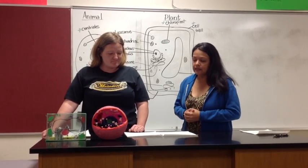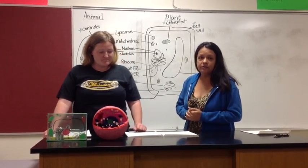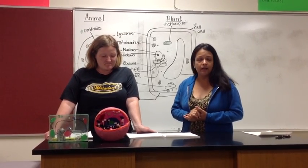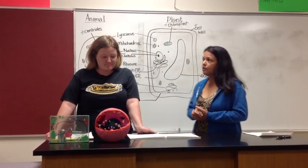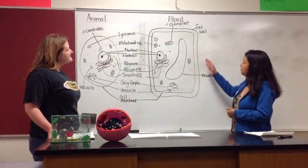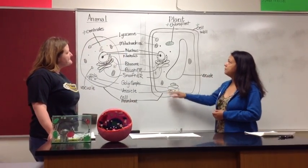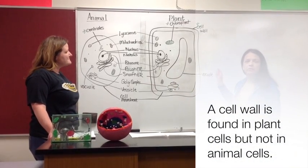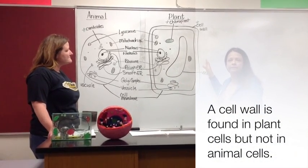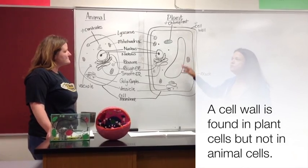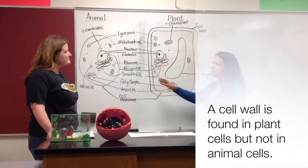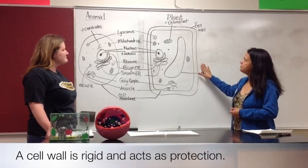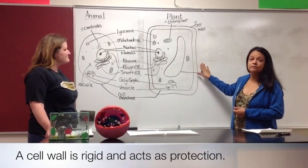Remember that a plant cell is eukaryotic, and here are some of the items that can only be found in a plant cell and not an animal cell. First, we have the cell wall, which can only be found in a plant cell. A little later we will learn that some other types of cells do have cell walls, but in this case just the plant cell. The cell wall is very rigid and it acts as protection.